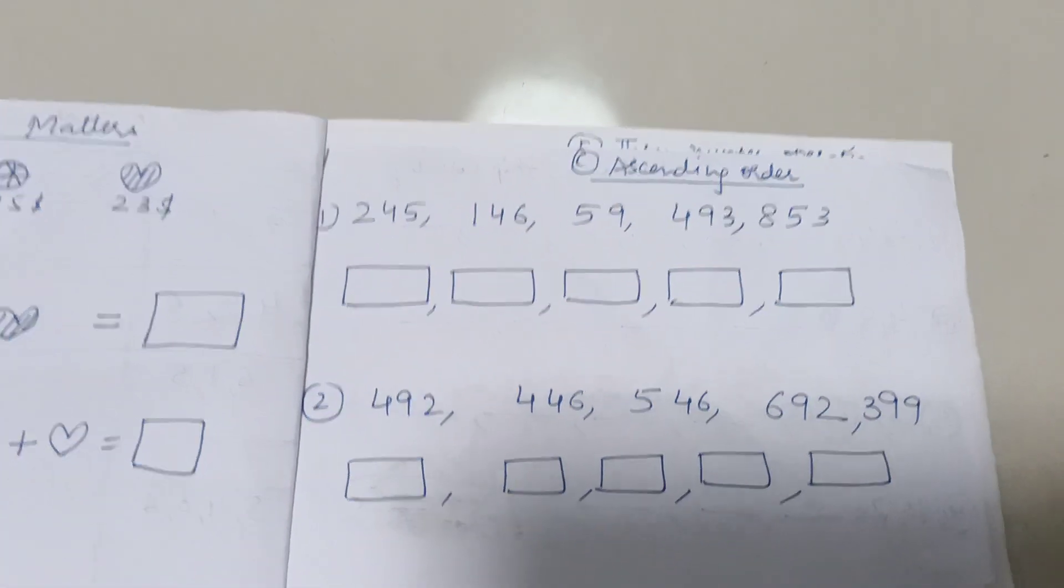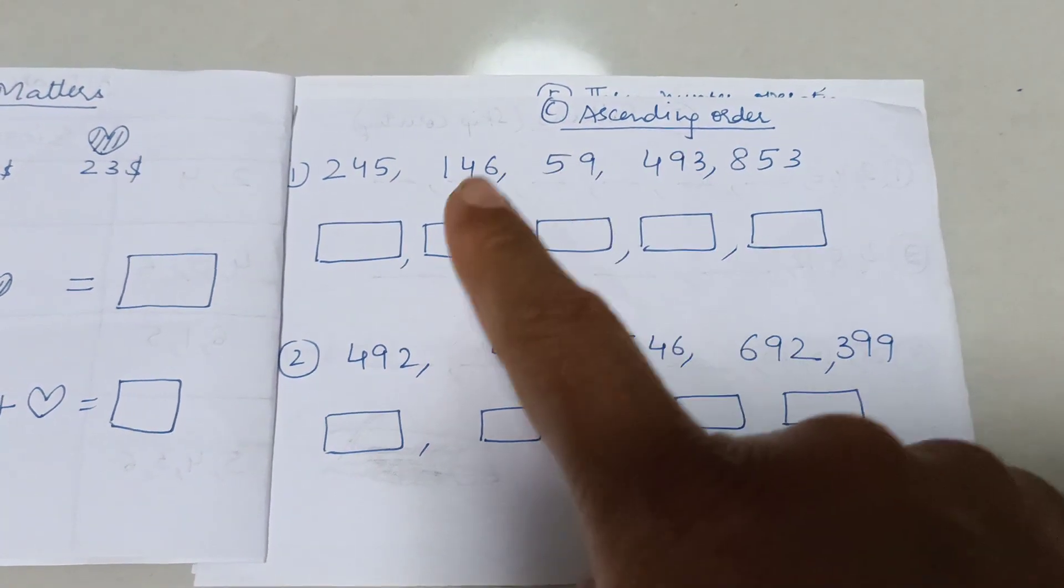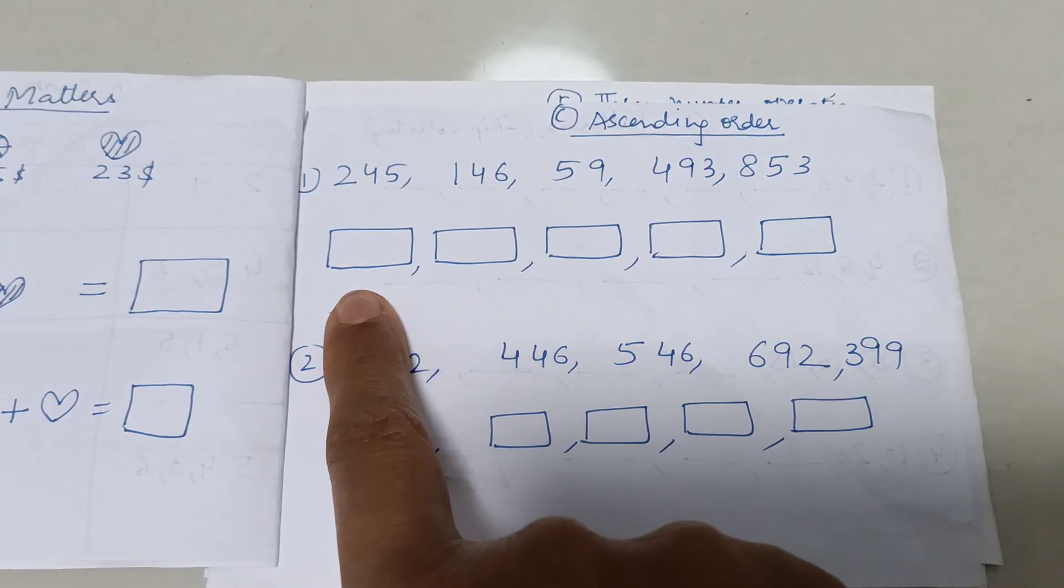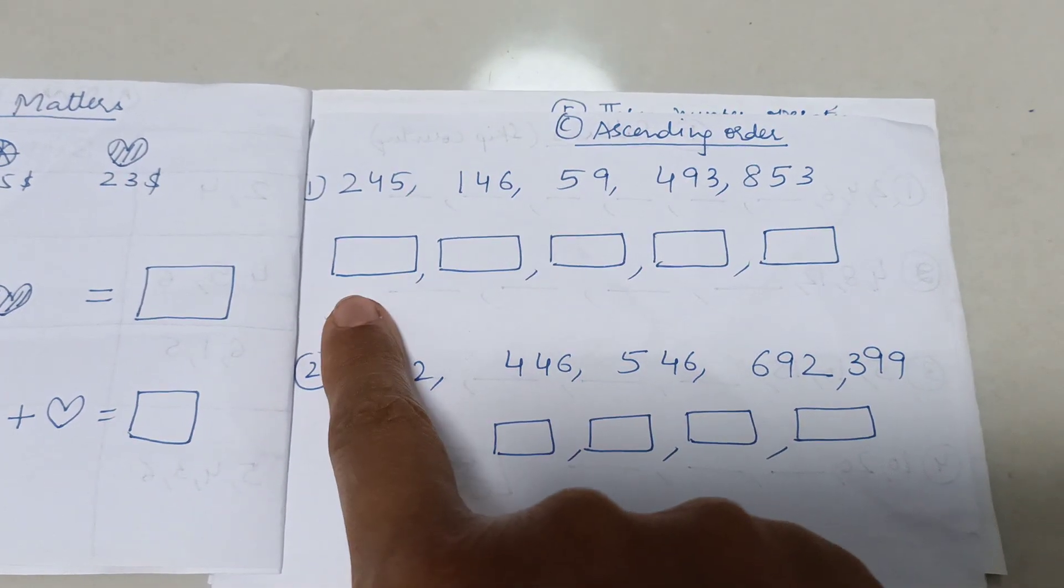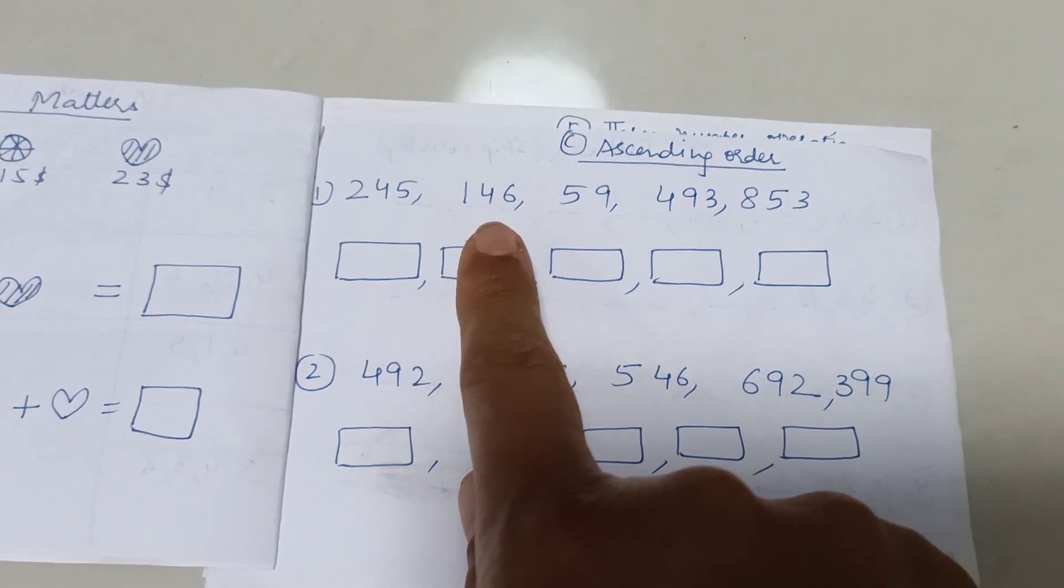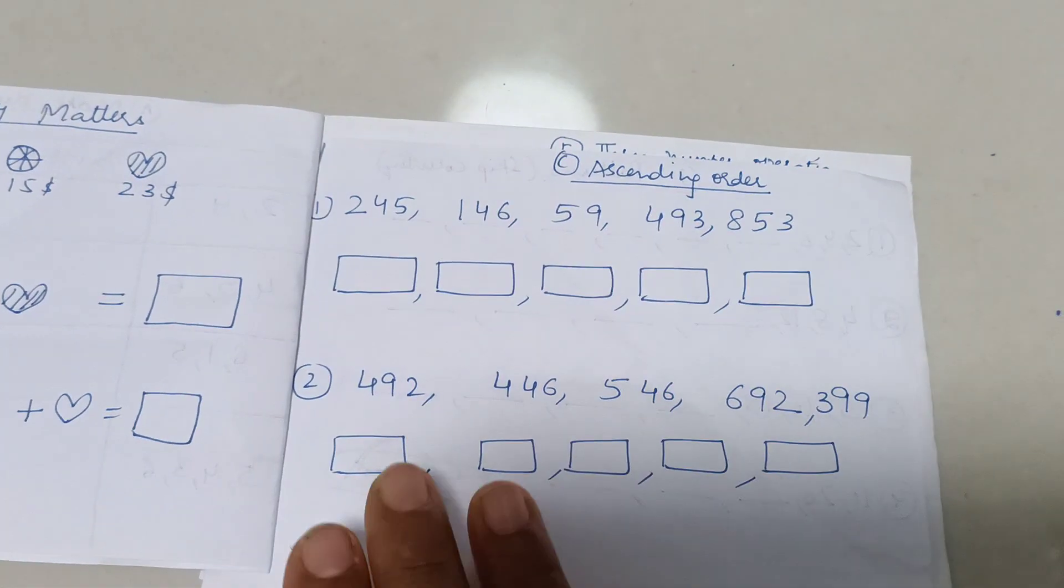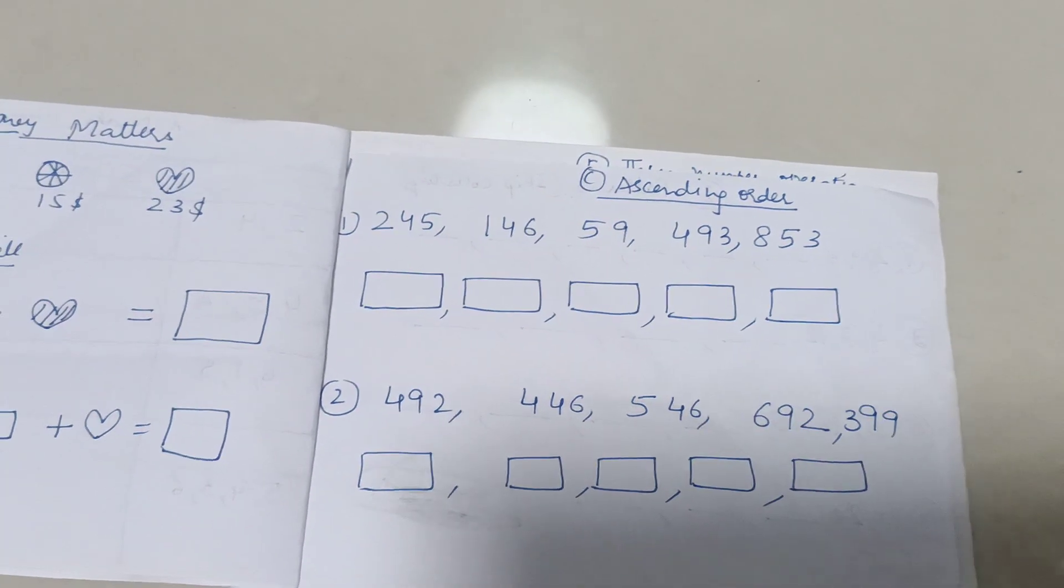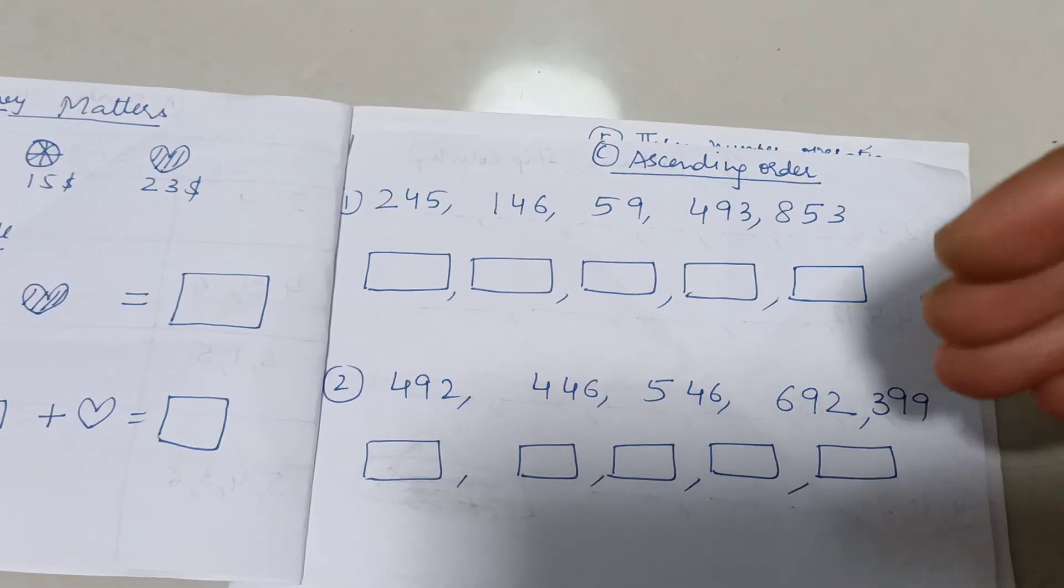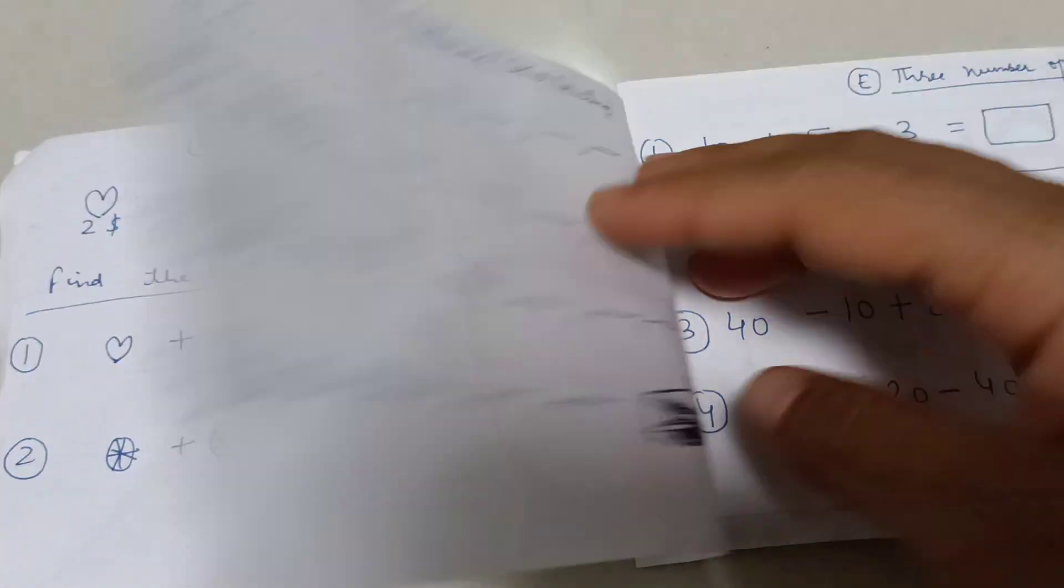Coming to this one, ascending order. Again, the concept of 100th and 10th. When we are comparing, smallest number will be the one which has 100th will be the minimum number. So 100th position is 0, so 59. Then you go to 146. Then you go to 245. Here the same thing. This is a revision concept we have done long back, but I just want to see does she remember, can she do it.